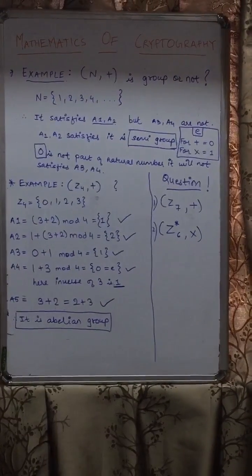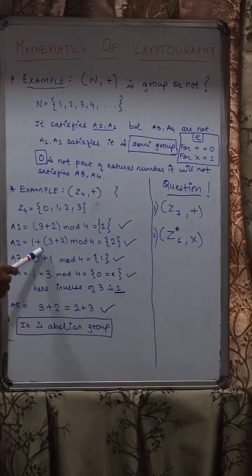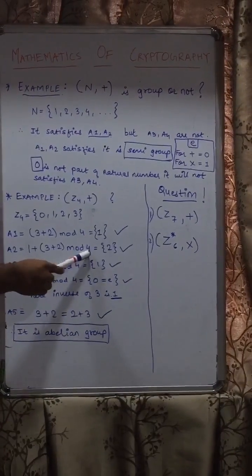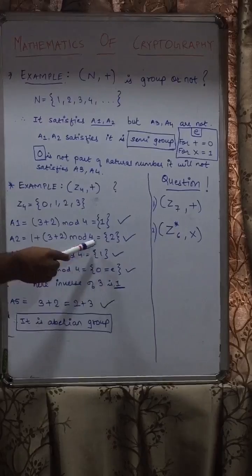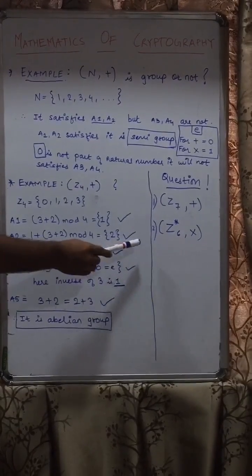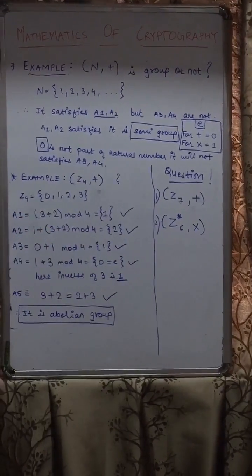Number 2, which is associative property. So we took (1 + 3) + 2 mod 4 or we can take 1 + (3 + 2) mod 4, which gives answer 2. So 2 is also in our domain. So this property also satisfies.